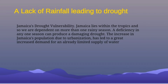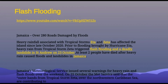Now let's talk about flash flooding, which is quite the opposite of drought. An example in Jamaica: over 280 roads were damaged by floods. Heavy rainfall associated with tropical storms Eta and Zeta affected the island since late October 2020. A news report states that prior to flooding brought by Hurricane Eta, heavy rain from Tropical Storm Zeta triggered flash flooding and a deadly landslide in St. Andrew on the 23rd of October.